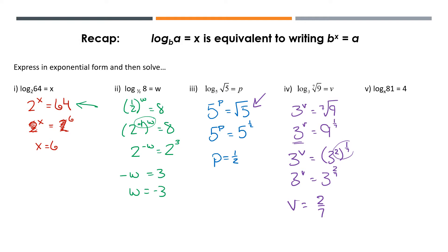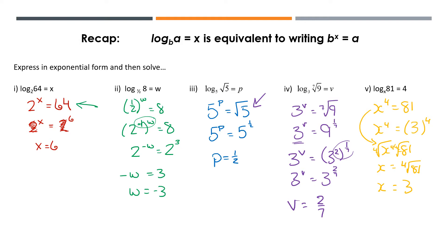One more. If you think you have the hang of this, press pause and try it yourself. It's a little bit different, so I'm going to walk you through it. We get x to the power of 4 equals 81. How am I going to get a common base here? I don't know what my base is, but I need something to the power of 4. I'm going to isolate x by taking the 4th root of both sides. The 4th root of 81 is 3. So up here I could have just put a 3 in the bracket, knowing that 3 to the power of 4 is 81. That tells me x is 3.